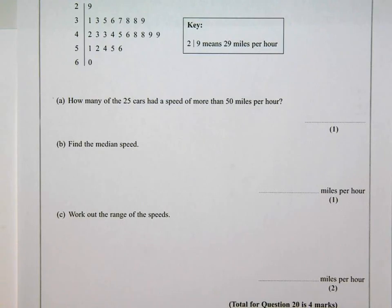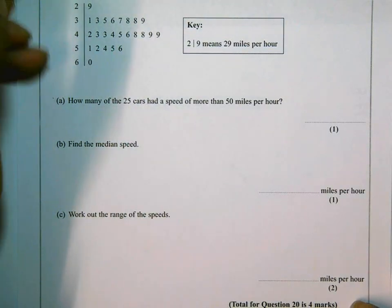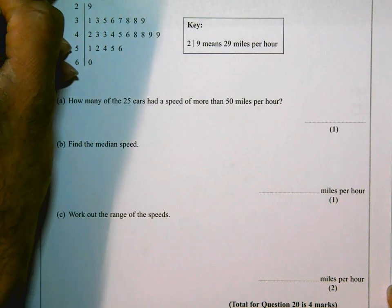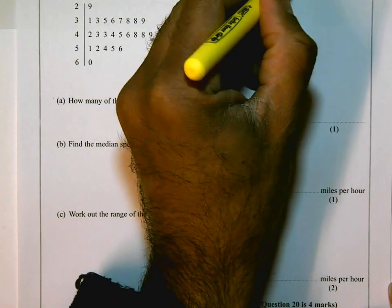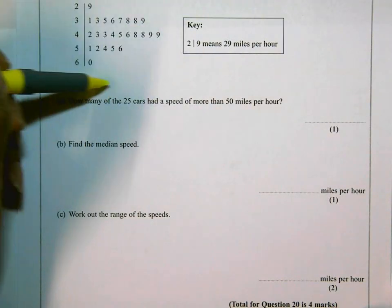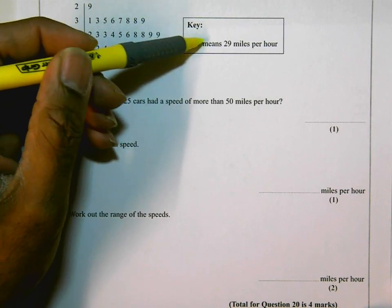Okay, this is question 20 on the non-calculator paper. The question is obviously a stem and leaf question, but they start off by telling you that. The stem and leaf diagram shows the information about the speeds of 25 cars. So that means on this side here there are 25 bits of information. Check the key. That 2 on one side and 9 on the other means 29 miles per hour.